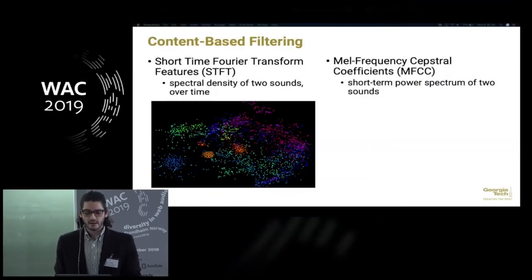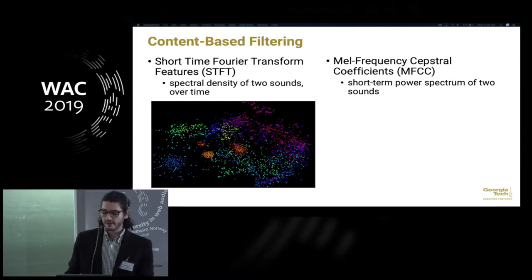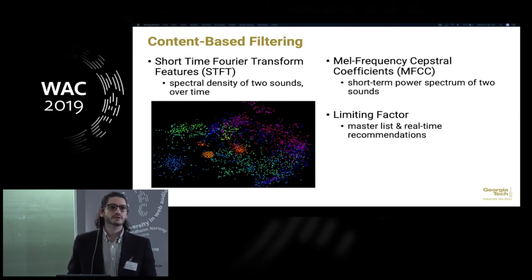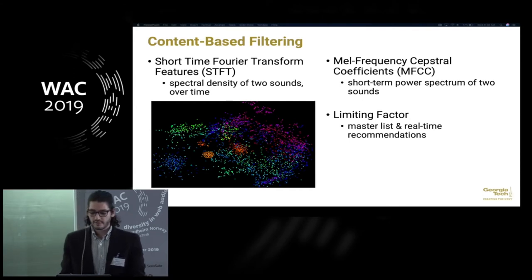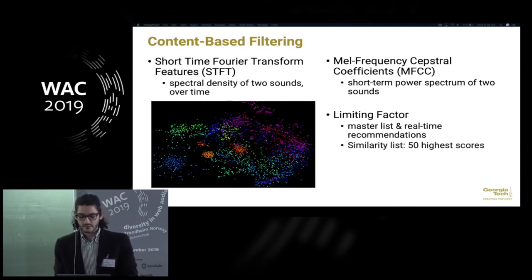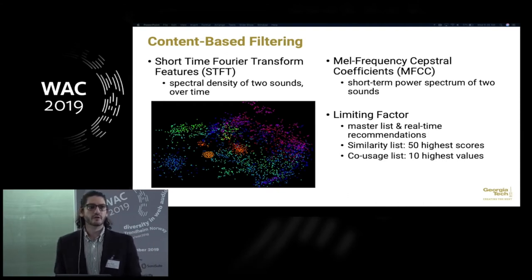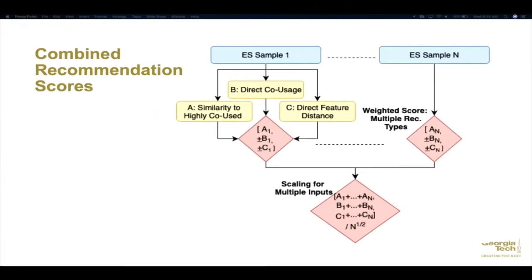This provides both a longer-term and shorter-term grouping of sounds. To make this program run in real time on EarSketch's servers as well as the client — which is usually a public school computer — we limit it to a few recommendations. The system uploads frequently with 10 values for co-usage information to analyze previous usage of the script and then updates in real time. The combined recommendation scores are the final representation of what to recommend based on each individual EarSketch sample.